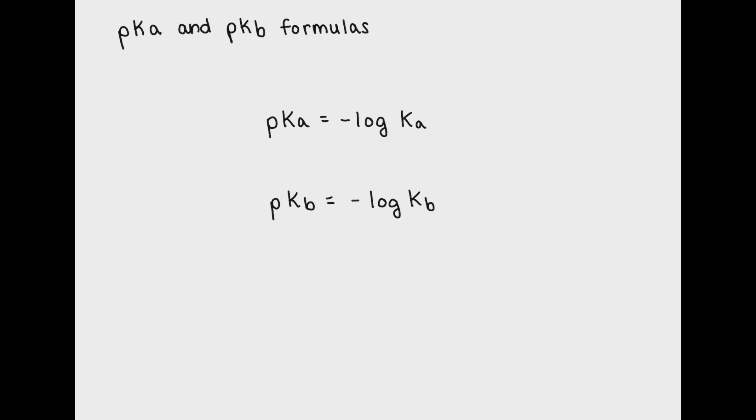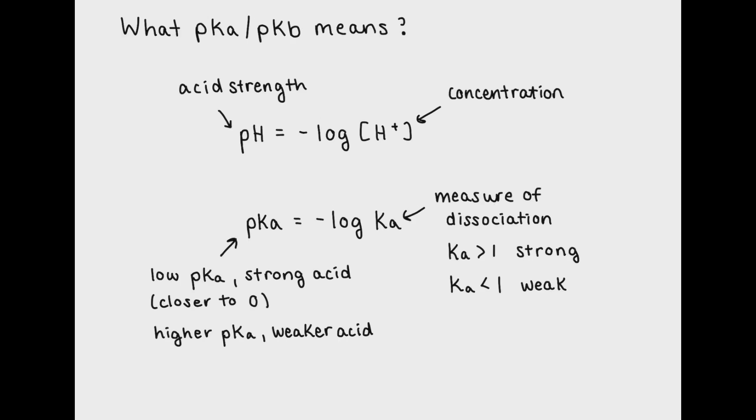pKa and pKb do the same thing. While H plus concentration is a measure of H plus concentration in solution, Ka and Kb values are a measure of the amount of dissociation a weak acid or base undergoes. This gives us useful information about the concentration of OH minus or H plus in solution.